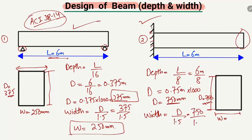Similarly, the width of the cantilever beam is found using the same formula: d divided by 1.5. The depth is 750 millimeters, so 750 divided by 1.5 gives a minimum width of 500 millimeters.